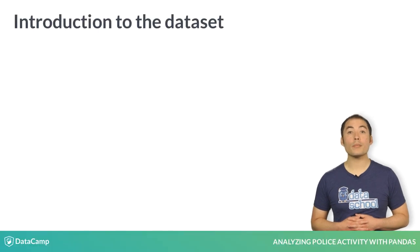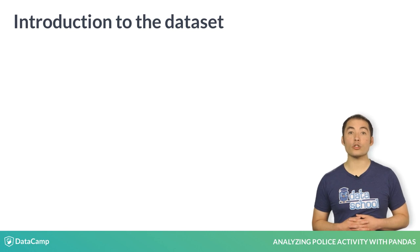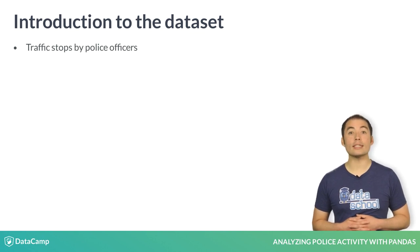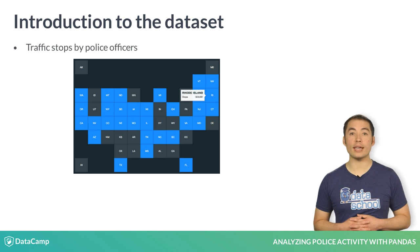Let's start by introducing the data. You'll be working with a data set of traffic stops by police officers that was collected by the Stanford Open Policing Project. They've collected data from 31 U.S. states, but in this course you'll be focusing on data from the state of Rhode Island.